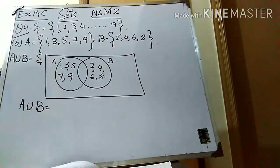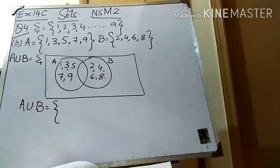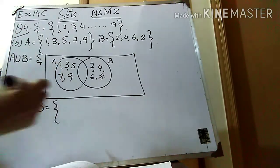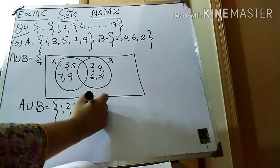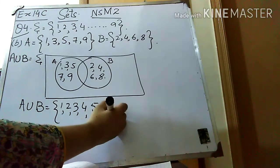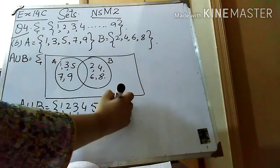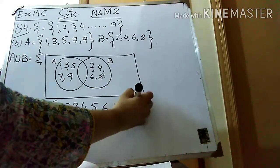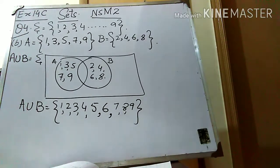For A union B, you have to write the factors together in sequence: 1, 2, 3, 4, 5, 6, 7, 8, 9. This is the answer of A union B for part B. I hope that this is clear to you. Now let's come to part C.